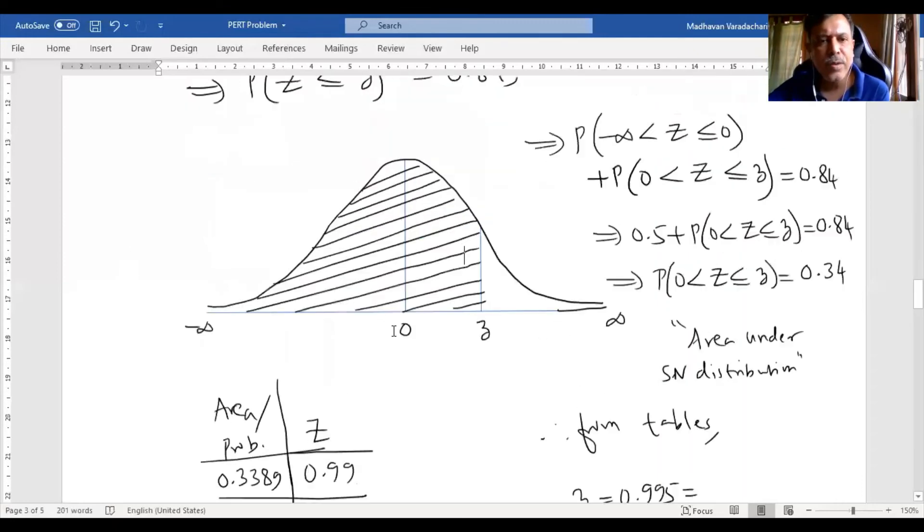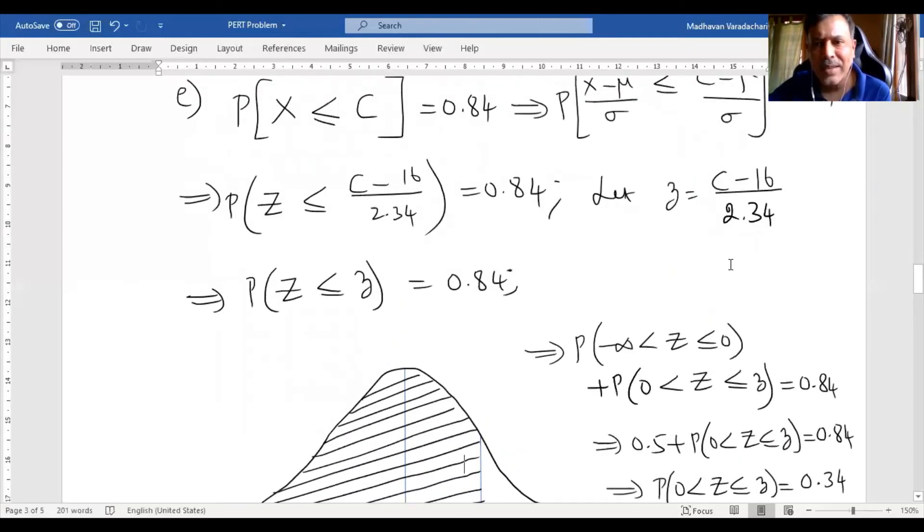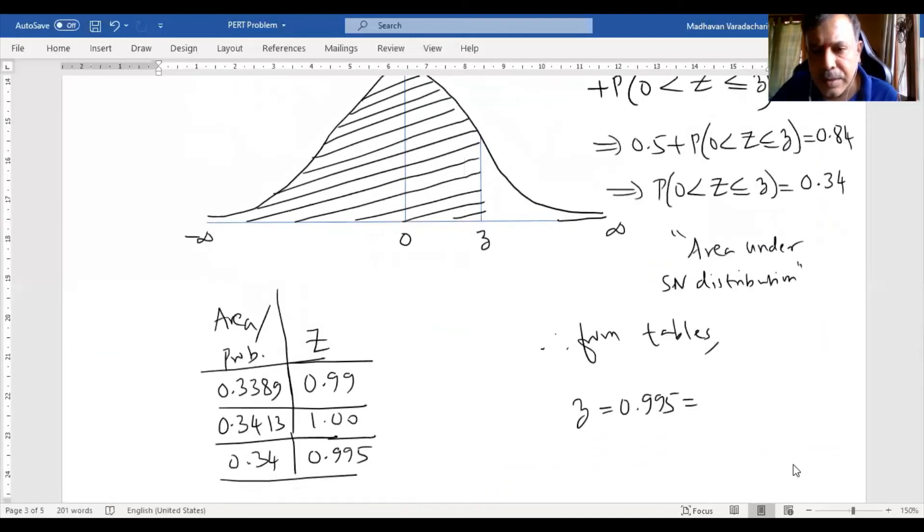Let us go back. What is our z? We assumed z as C minus 16 by 2.34. By doing cross multiplication, 0.995 times 2.34 plus 16 gives us 18.33 weeks. If the probability is 0.84, then the actual duration to complete the project can be 18.33 weeks.